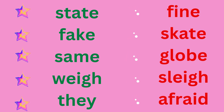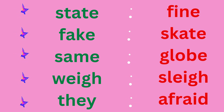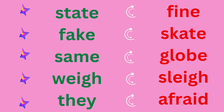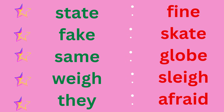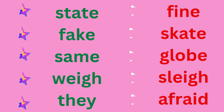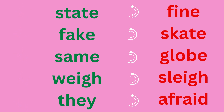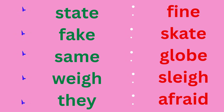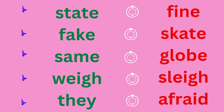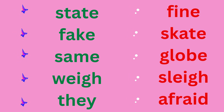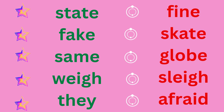Red column: Fine — F-I-N-E, fine. Skate: S-K-A-T-E, skate. Globe: G-L-O-B-E, globe. Sleigh: S-L-E-I-G-H, sleigh. Afraid: A-F-R-A-I-D, afraid.